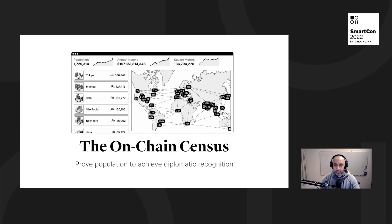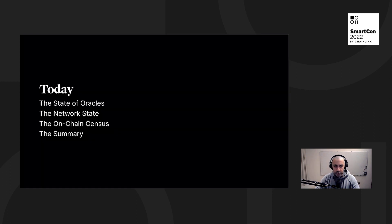Today, I'm going to talk about something I'm calling the on-chain census — a way to prove the population of a digital community to achieve diplomatic recognition. The digital community could be like a DAO, a startup society, or something we're calling a network state. I'll cover first the state of oracles, then the network state, then this on-chain census concept, and then wrap it all up.